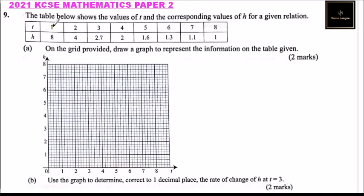We are going to plot the values of t with the corresponding values of h. So we start, our grid is ready, so we start with when t is 1, h is 8, so we put a mark there. When t is 2, h is 4, so that's where we have our next mark.